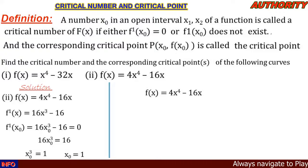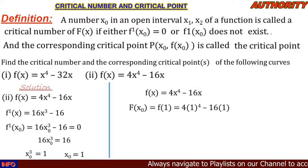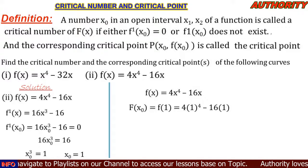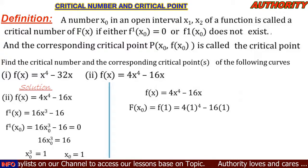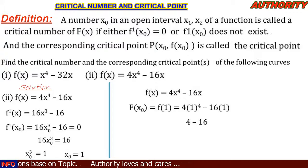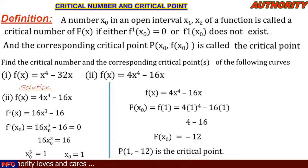To find the critical point, plug x-naught = 1 into f(x) = 4x⁴ - 16x. We get f(1) = 4(1)⁴ - 16(1) = 4 - 16 = -12. So the critical point is P(1, -12).